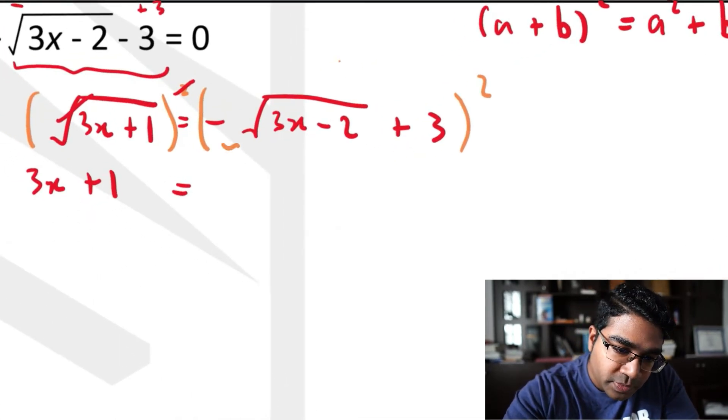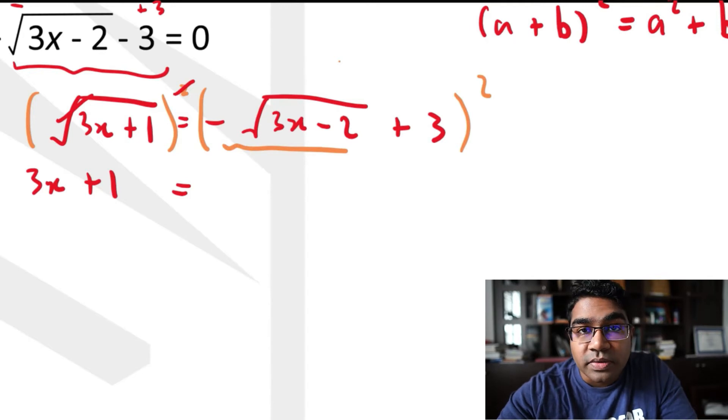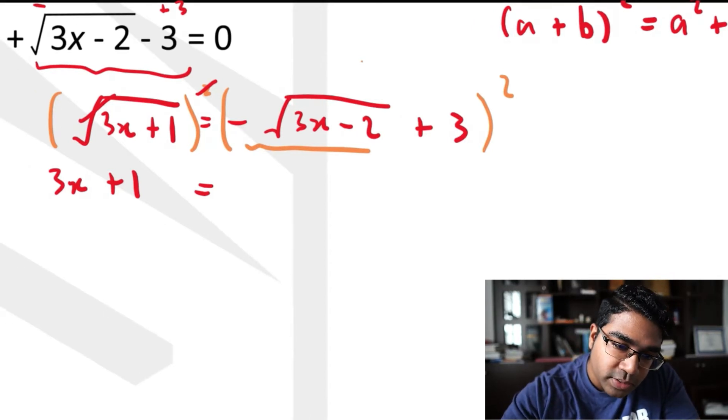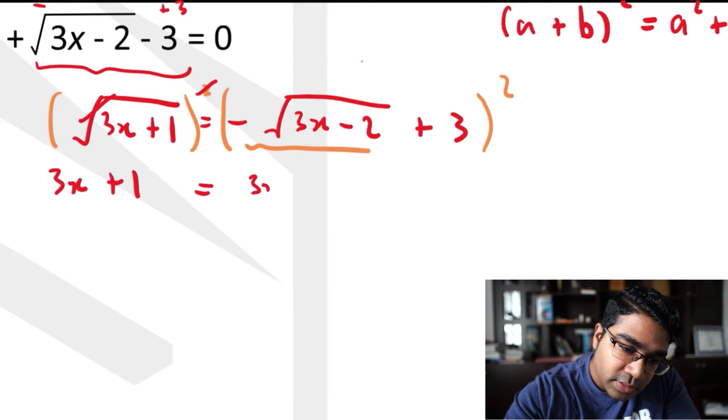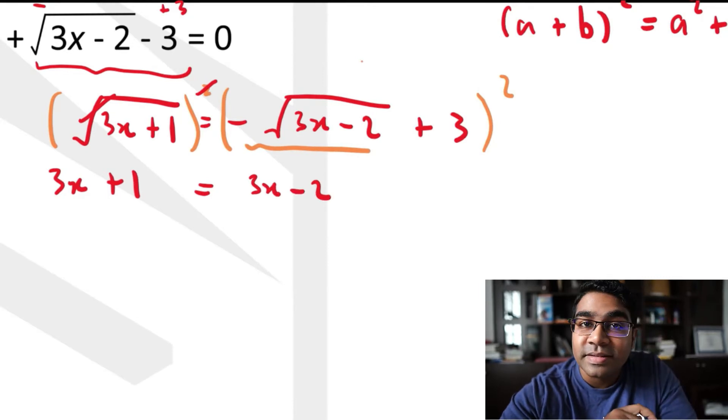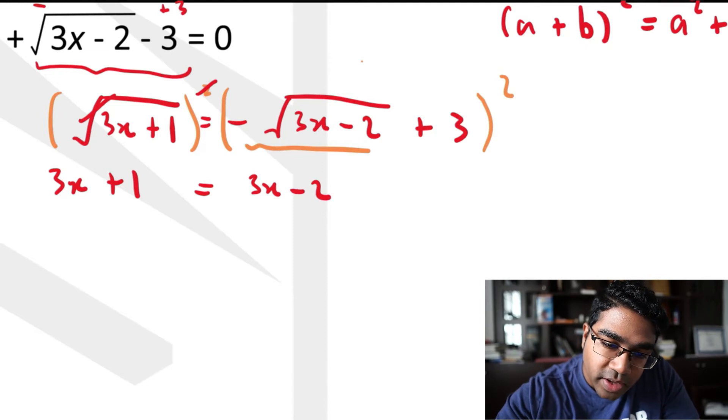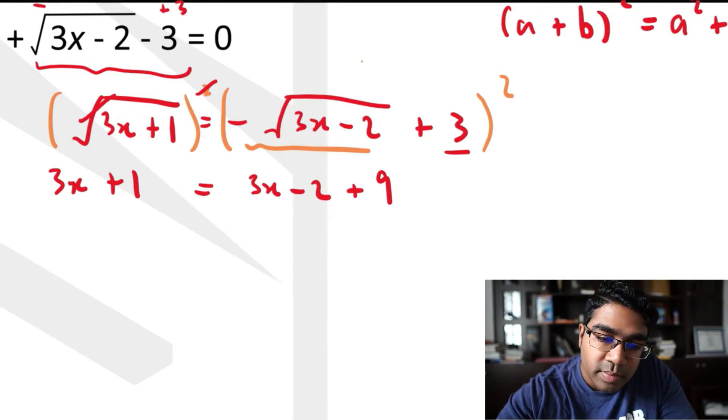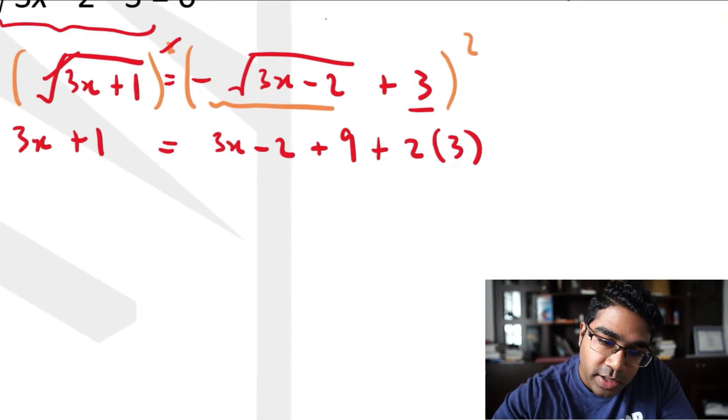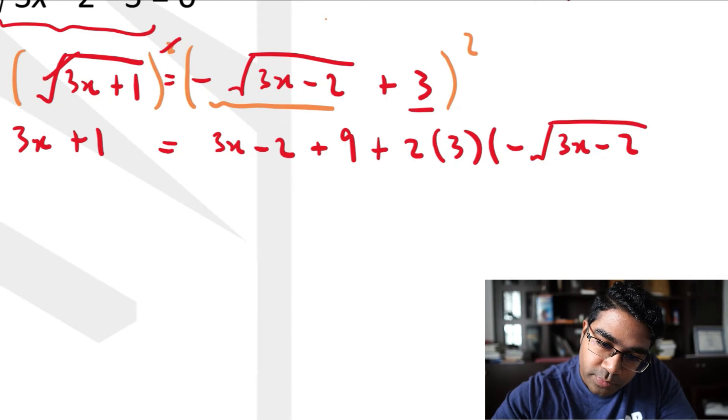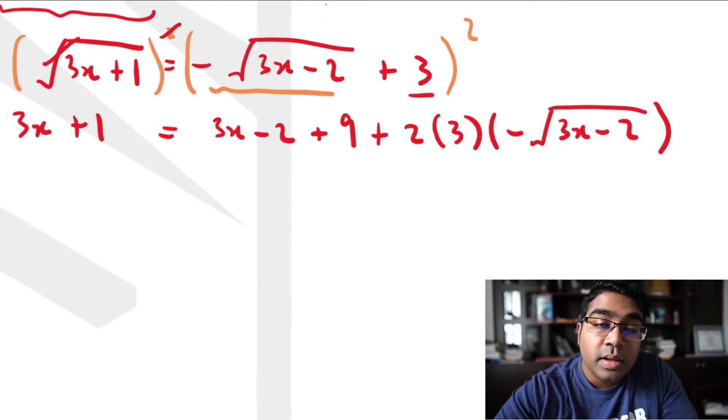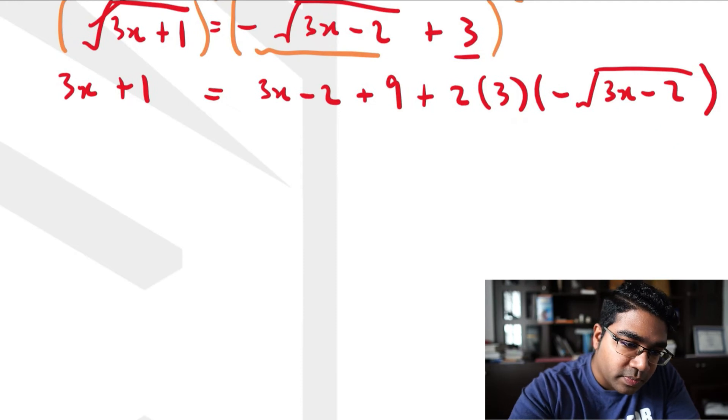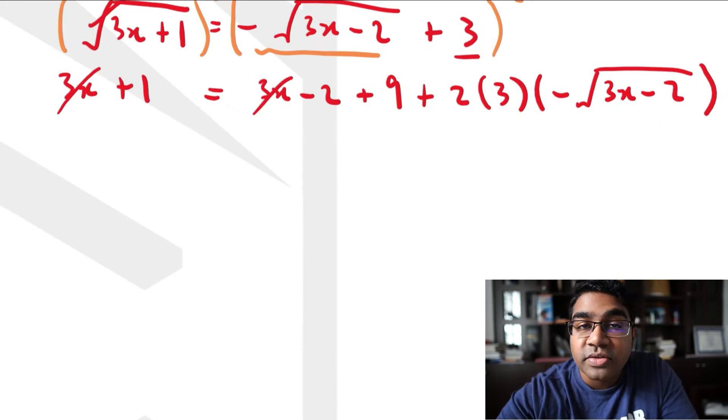So this is a. We're going to square a, negative √(3x-2). When you square that, you will get positive 3x-2, because once again square root and square will cancel off. And then we have b squared, plus 9, plus 2ab, plus 2 times 3 times negative √(3x-2). And now we just simplify.